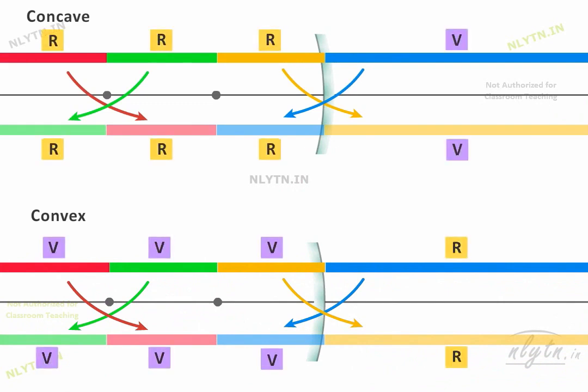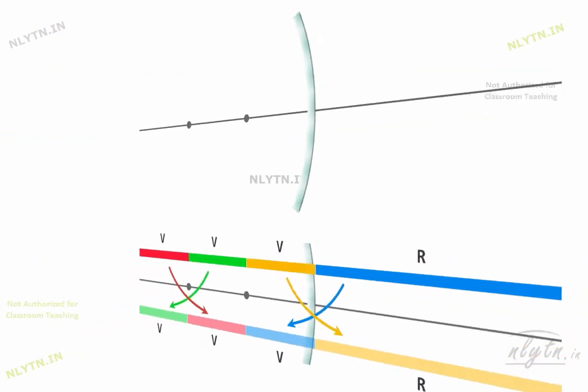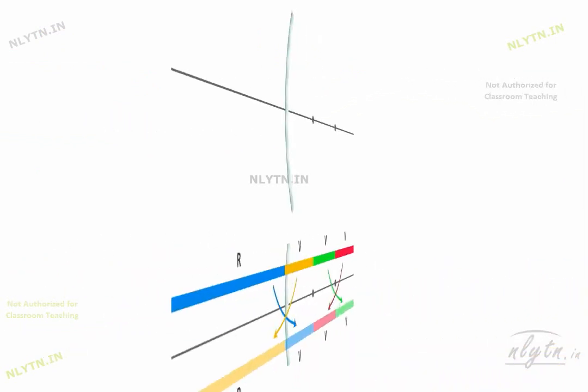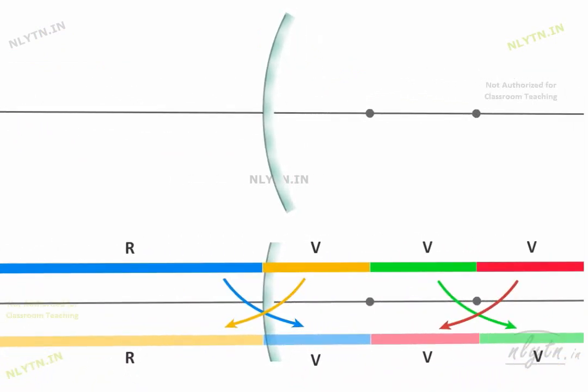Except that the real and the virtual are swapped, although we will usually consider the convex mirror like this. So a flipped version of this diagram will be more useful.